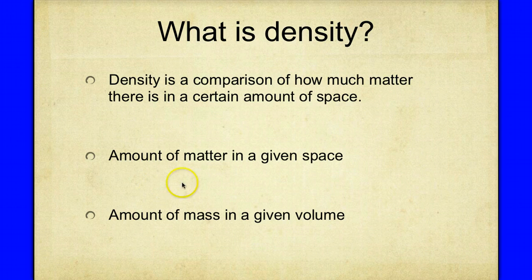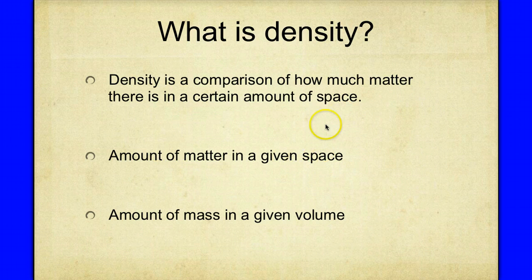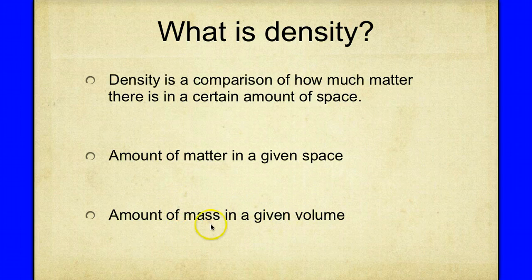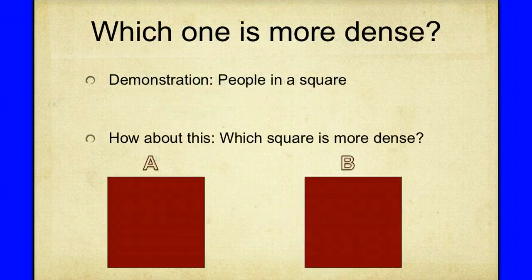If you remember, our definition for mass is the amount of matter in an object, and our definition for volume is the amount of space an object takes up. So density can be referred to as the amount of mass in a given volume.